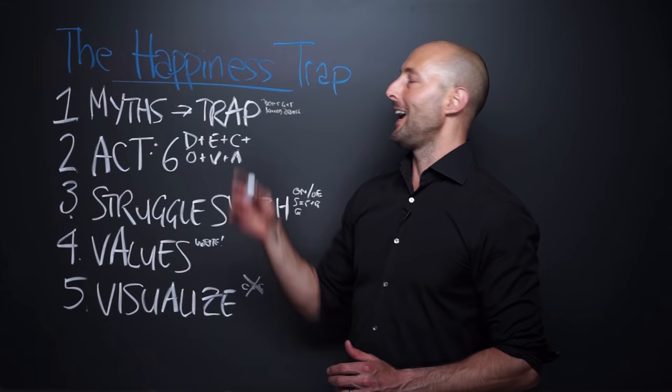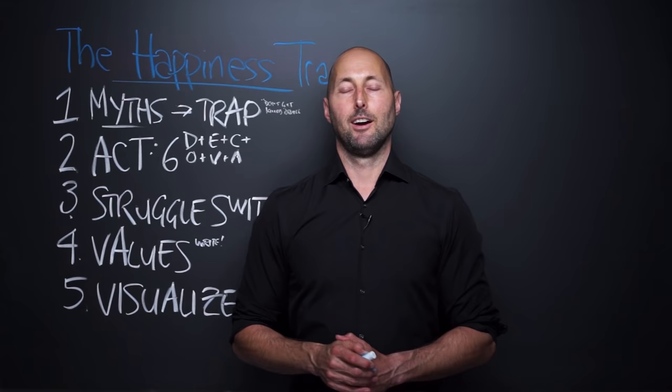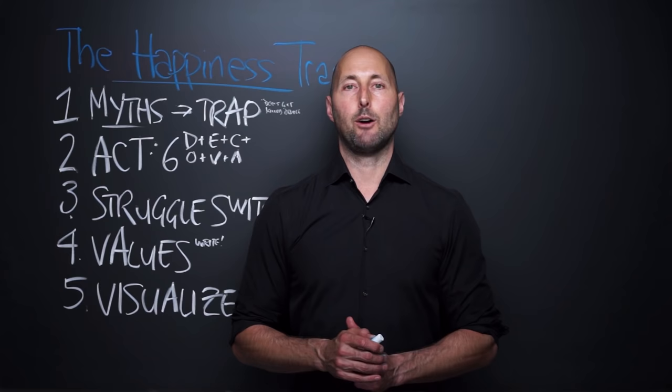We'll start with, what is The Happiness Trap? Well, The Happiness Trap, chapter number one in the book, is what he calls fairy tales. How does every single fairy tale end? You tell the story, and they lived happily ever after. Everything needs to be super happy all the time.